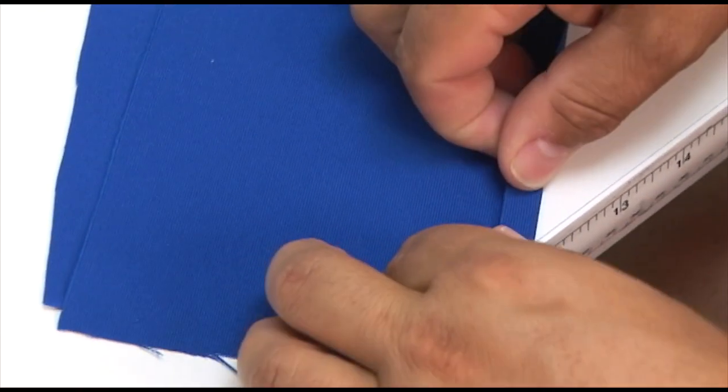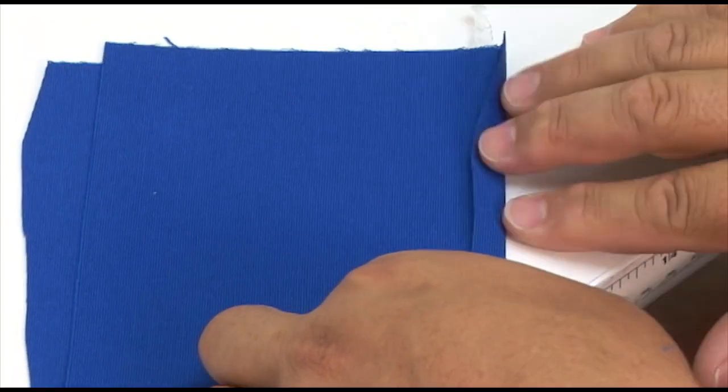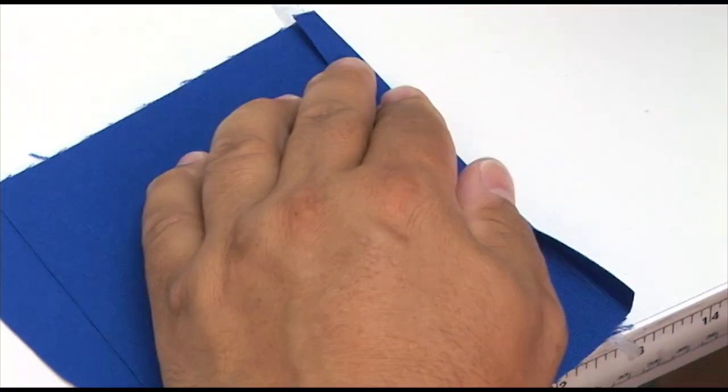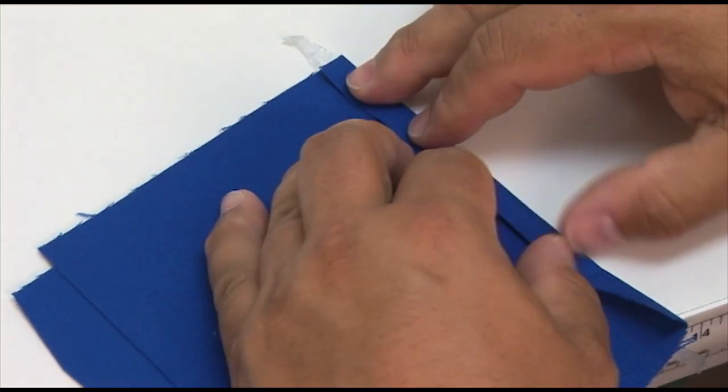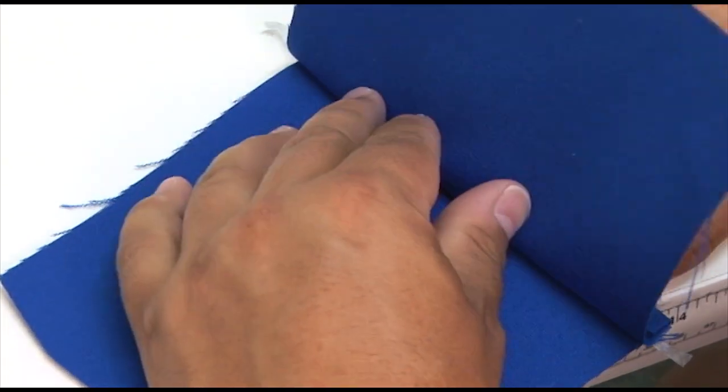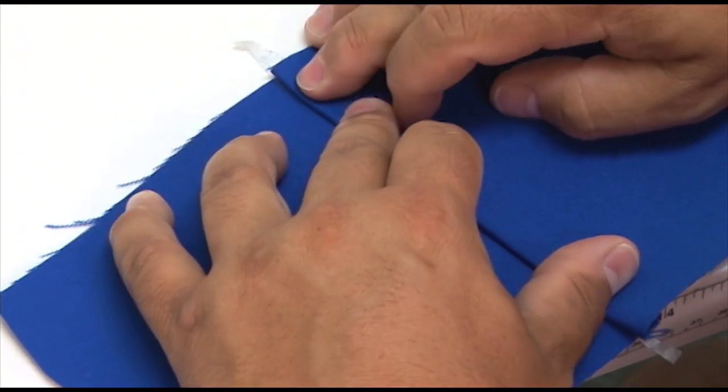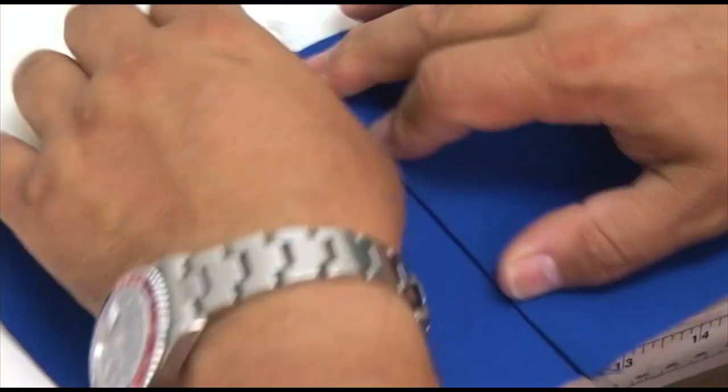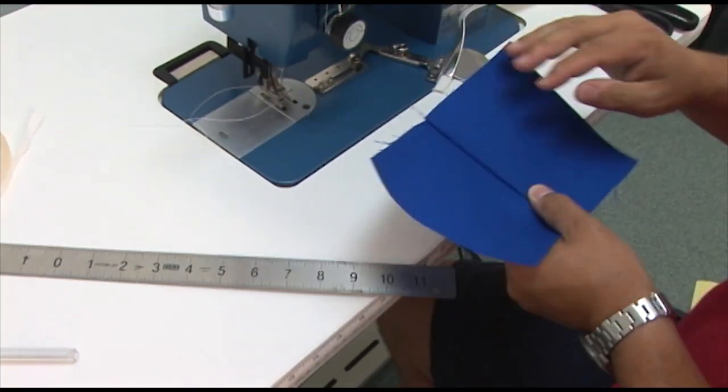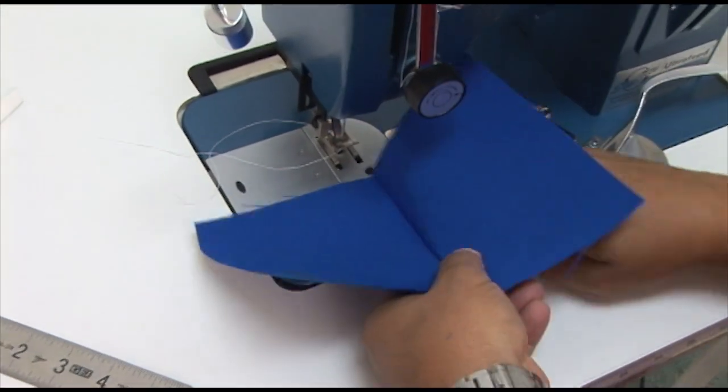Next thing we're going to do is fold up this top edge. And you can baste that down if you want, but this is a small enough piece I probably don't have to. And then I'm going to fold out the primary piece like so. And now I'm ready to sew this assembly. Take it to the sewing machine.